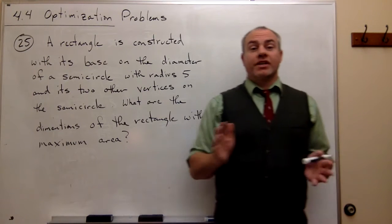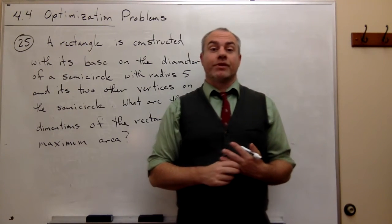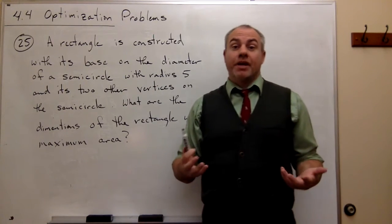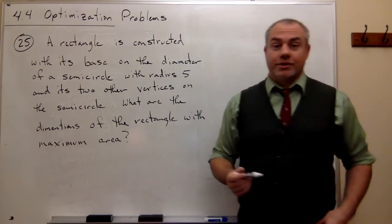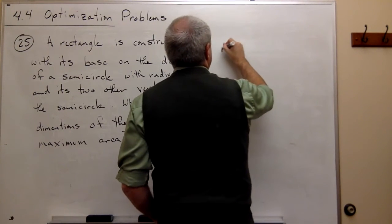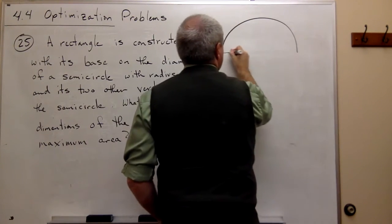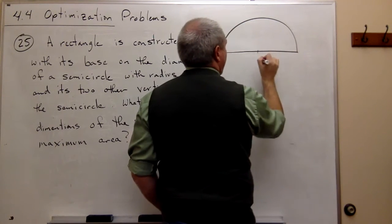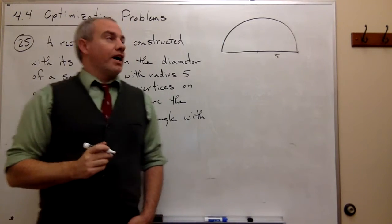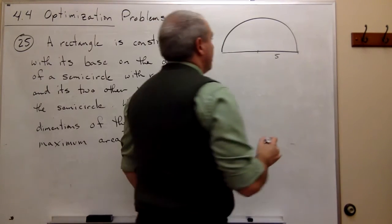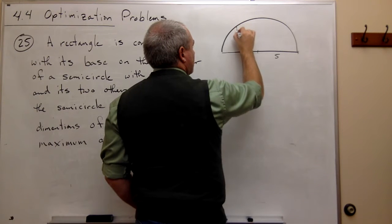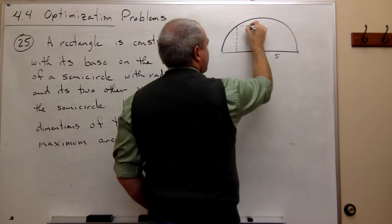The first thing we should always try to do when we're doing an applied optimization problem is set up a picture of the problem if we're able to. So what we've got here is we have a semicircle, and we're told that it has radius 5. And then we've got a rectangle that is inscribed in this semicircle.